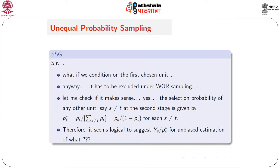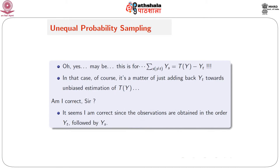What if we condition on the first chosen unit? It has to be excluded under without replacement sampling. The selection probability of any other unit s, where s is not equal to t, at the second stage is given by ps-star, which equals ps over the summation of ps for s not equal to t, which equals ps divided by 1 minus pt, for each s not equal to t. Therefore, it seems logical to suggest ys divided by ps-star for unbiased estimation of the summation over s not equal to t of ys, which equals ty minus yt. In that case, it is a matter of adding back yt for unbiased estimation of ty.